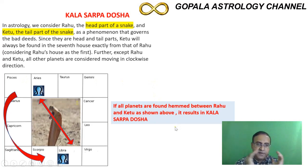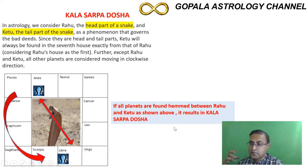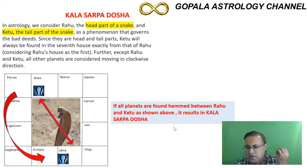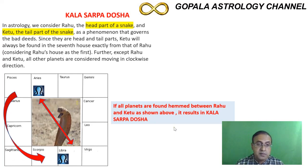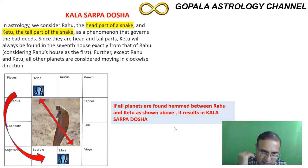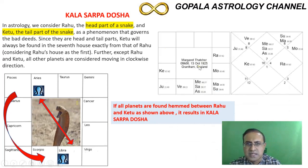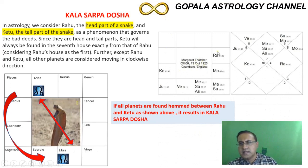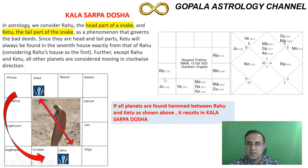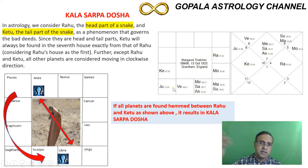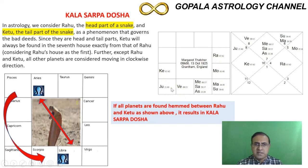Kala Sarpa Dosha is quite a serious problem — especially the first 35 years of a person's life will be challenging. Whatever they try to do and whatever efforts they put in, they will get only 50 to 60 percent of the results, leaving people very frustrated. As an example, Margaret Thatcher was born on 13th October 1925 with this combination — Rahu and Ketu engulfing all planets on one side. We have hundreds of such examples; Nehru was also born with Kala Sarpa Dosha.